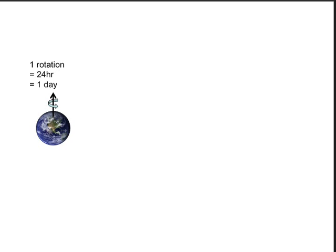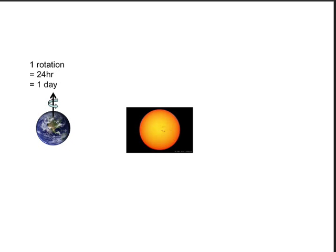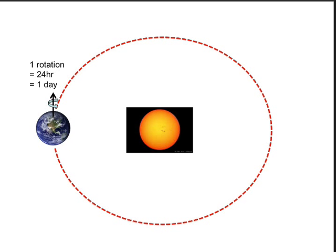Everything I'm going to talk about in this lecture is a consequence of the Sun's gravitational influence on the Earth, which causes the Earth to revolve around the Sun once every 365 days — the period we call a year. We use the term revolution to distinguish this from rotational motion. The Earth spins on its axis once every 24 hours — that's one rotation — and it revolves around the Sun once every 365 days, which is a year.